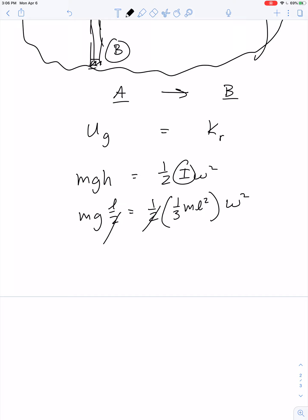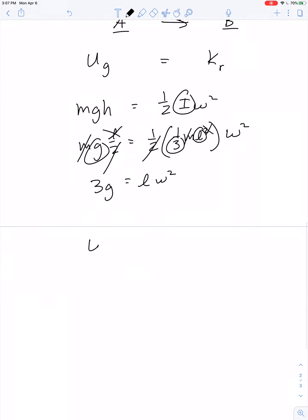So we can cancel that 2, we can cancel one of the L's, we can cancel out the M. So we have 3G is equal to L times omega squared. I guess that means omega is equal to the square root of 3G over L.